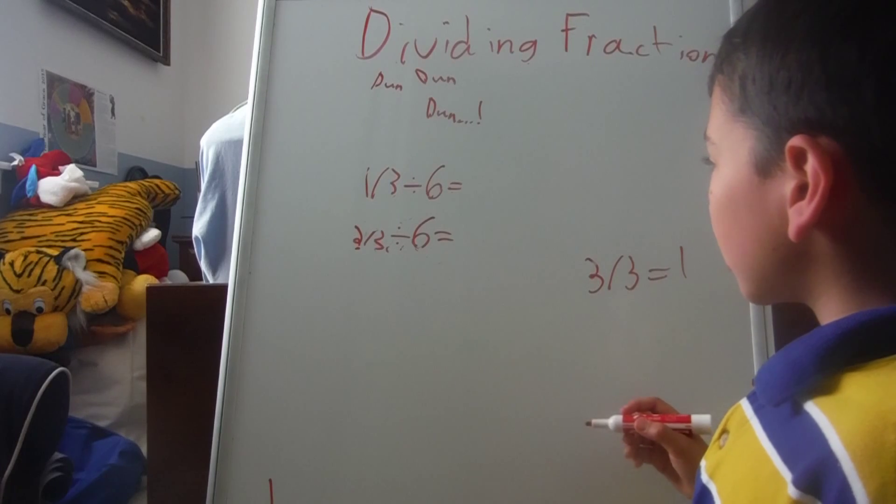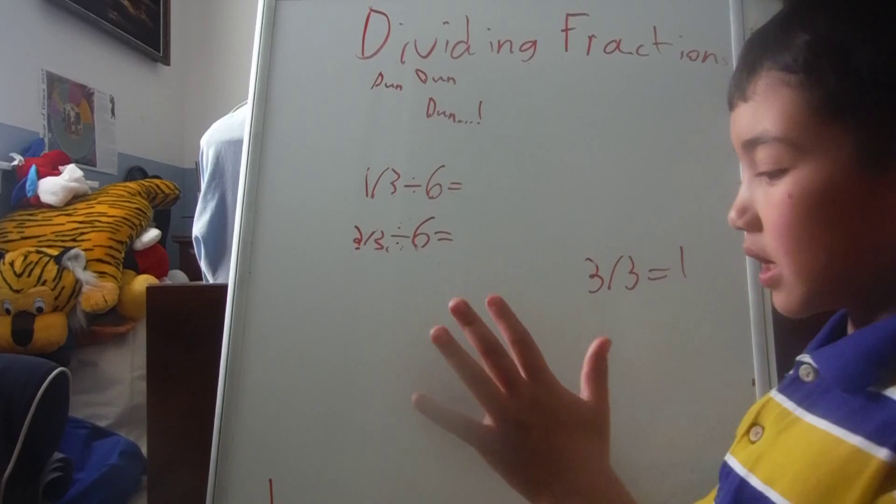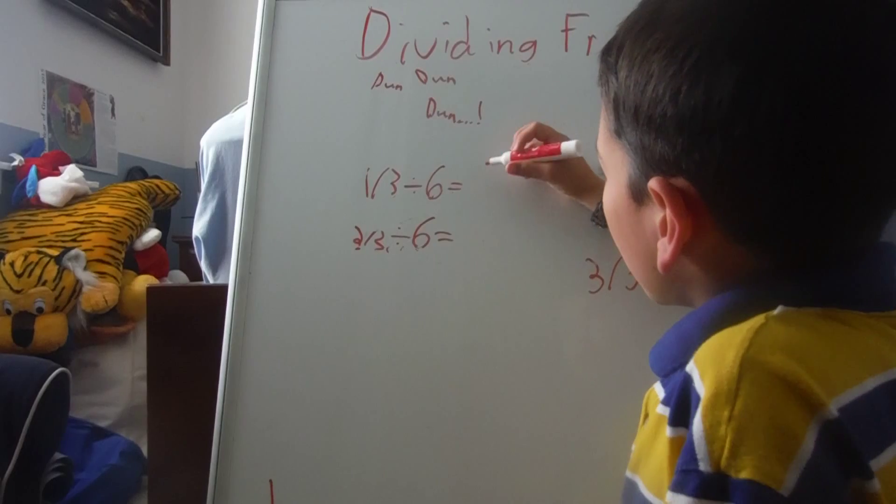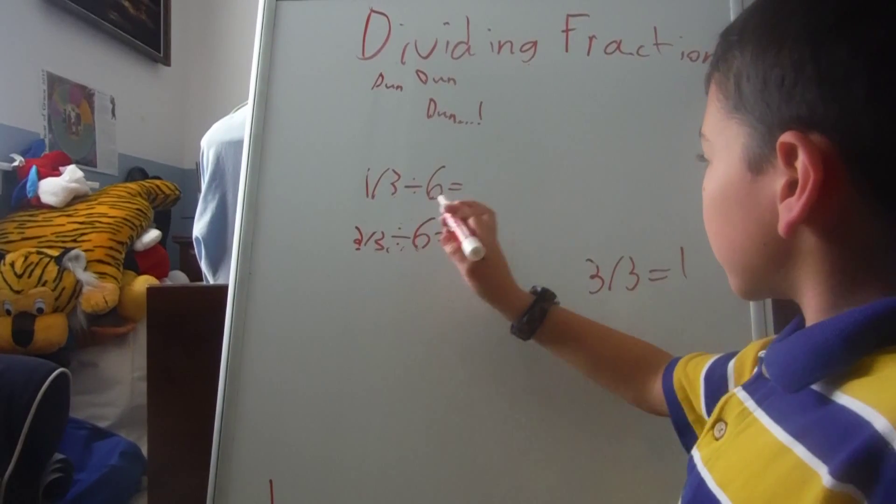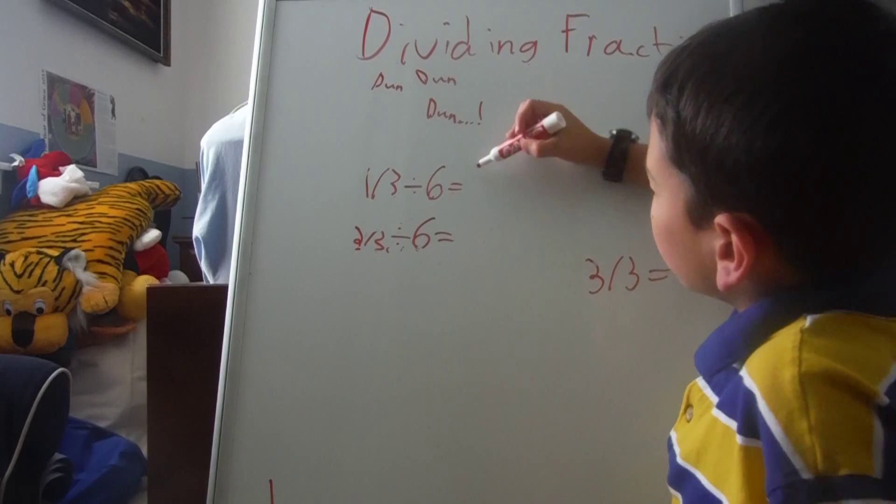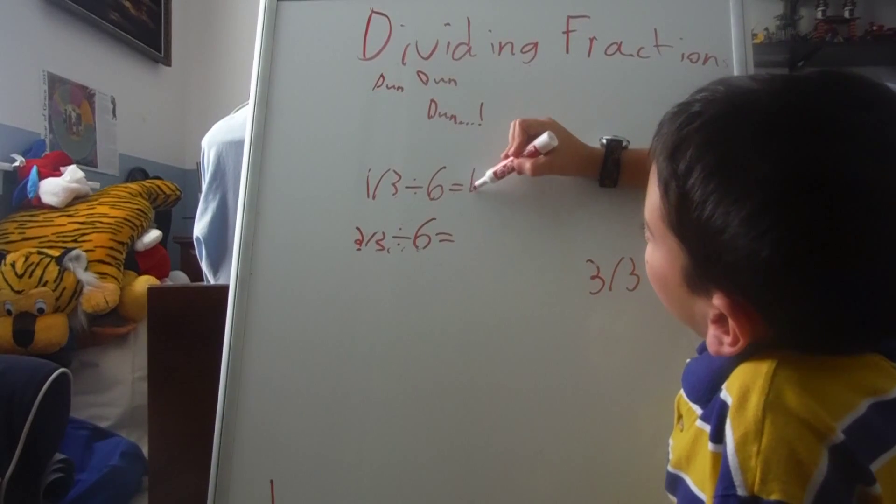Because we have to do three for three thirds. Six times. Because that only equals one. So, that is six. Six. Twelve. Eighteen.